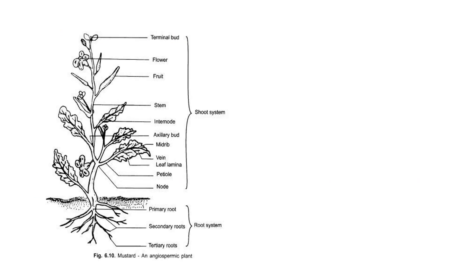In this seed diagram, the mustard plant's soil portion is the root system. There are three types of roots: primary root, secondary root, and tertiary root. The primary root is the mature root, and the growing root is at the apex portion.